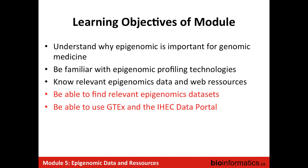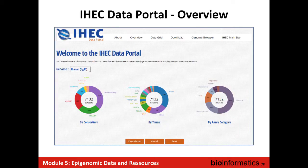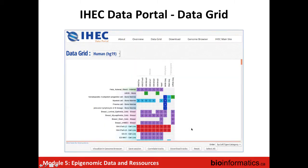Before we move on to the actual practical, just a few more slides on the features of the different portals we're going to play with. The IHEC data portal aggregates data from different consortiums and you can navigate these data sets by the tissue they come from. If you have a specific tissue of interest where you think a variant might be important, you can navigate by tissue and then by different assays.